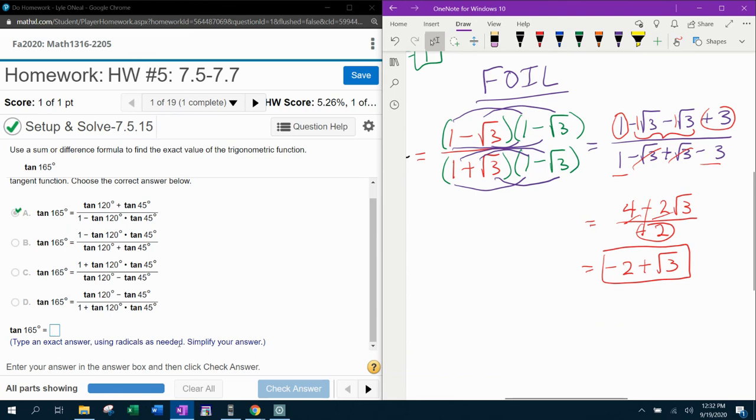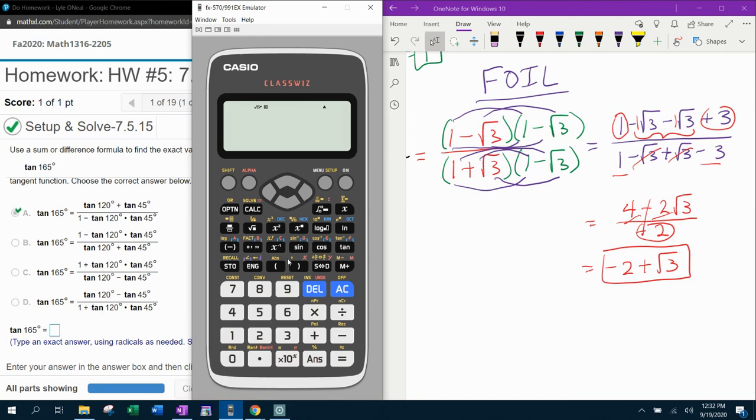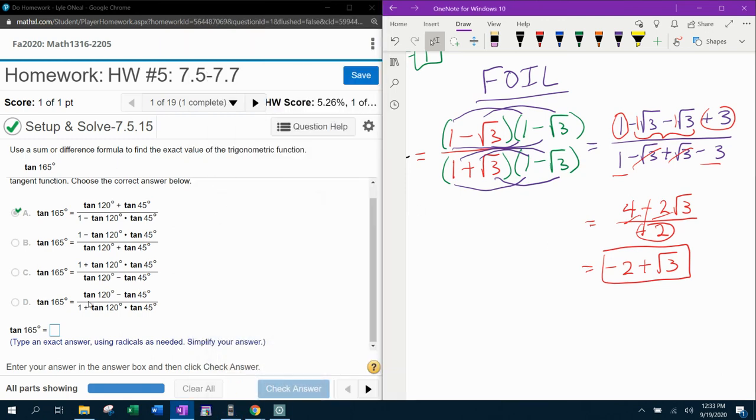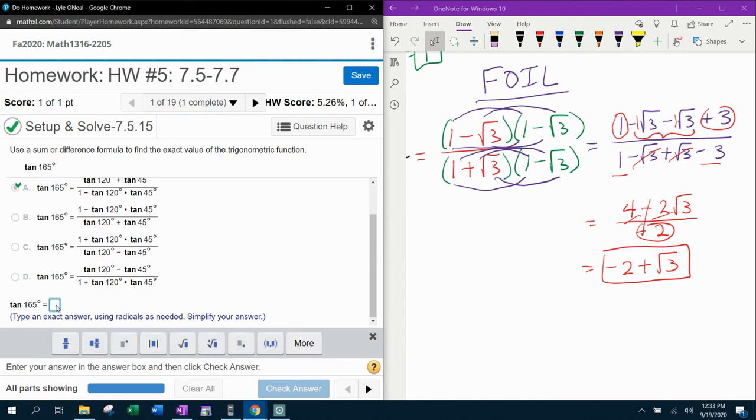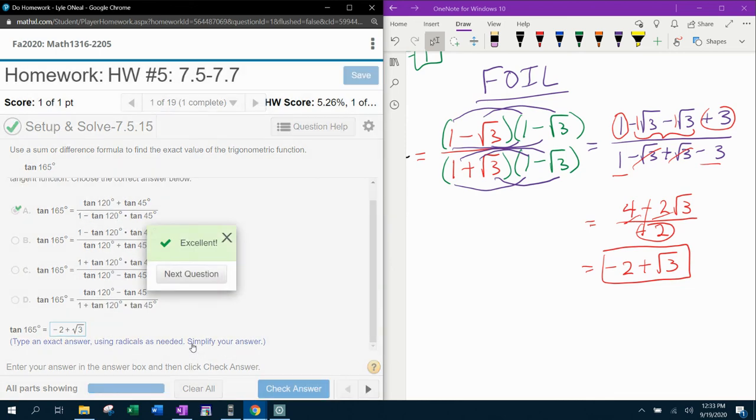And before I input that into MyLabMath, I would like to use the calculator to check that. So if you have the Casio ClassWiz, you're going to find out that this is a fantastic model here. I've got my calculator in degree mode. And we're simply going to type in tangent of 165. Notice I'm just typing in the original problem that they wanted me to calculate in degree mode. Look at that. Fantastic. Now let's see if MyLabMath likes it. Negative two plus square root of three works out to be correct.